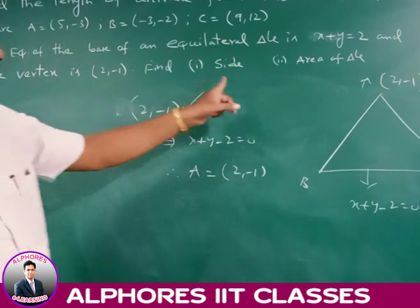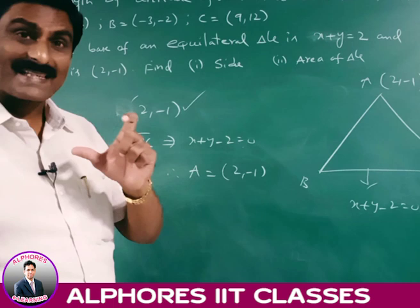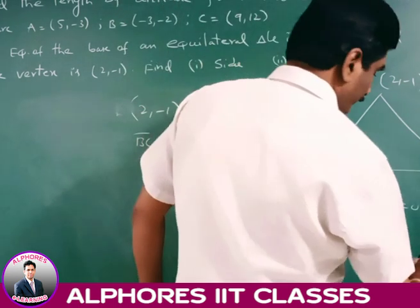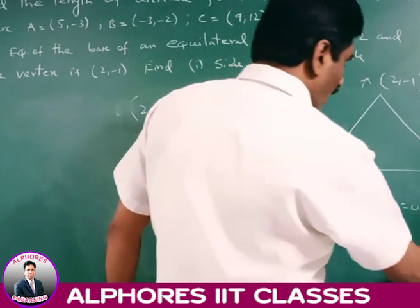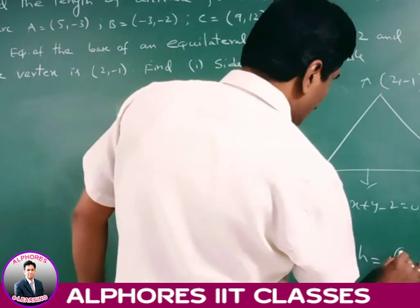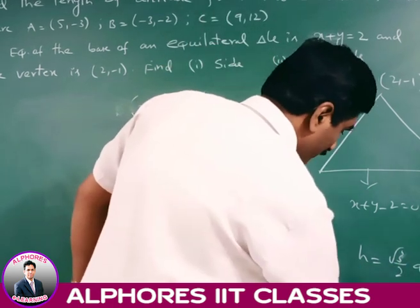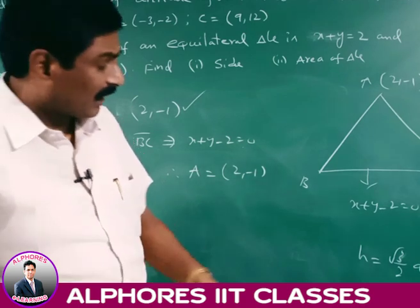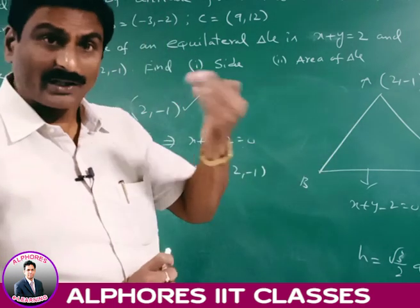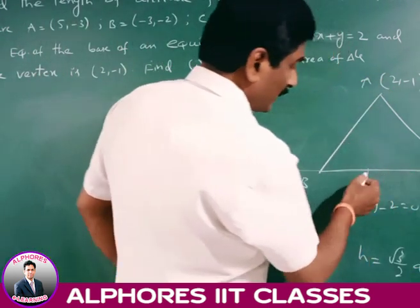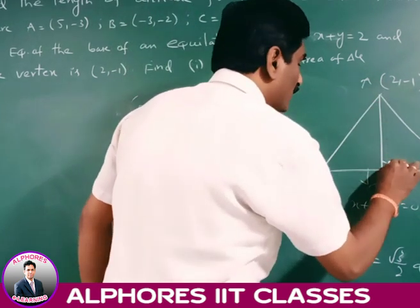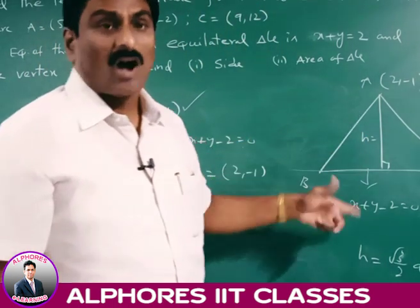We find the side and area of the triangle. For an equilateral triangle, the relation between height H and side A is H = (√3/2)·A, so A = 2H/√3. If we find the height (the altitude from A to BC), we can get the side. The height H is the perpendicular distance from vertex A(2, -1) to line x + y - 2 = 0: H = |2 + (-1) - 2| / √2 = |-1| / √2 = 1/√2.